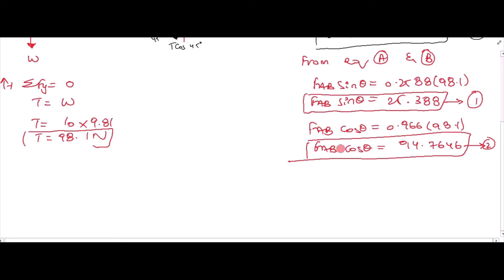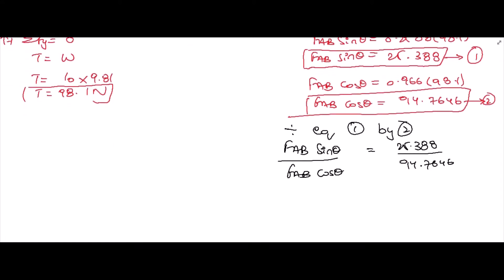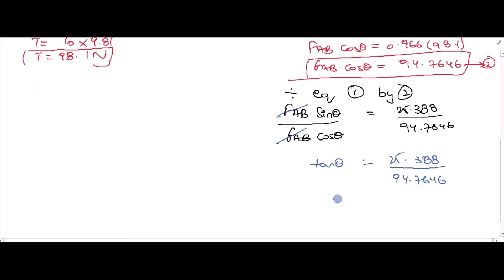To solve these equations, now I have two unknowns and two equations. So if I divide equation 1 by 2, then from here FAB cancels out. Sin over cos is equal to tan theta. From here, theta is equal to 15 degrees.